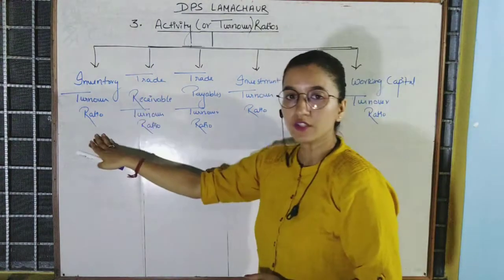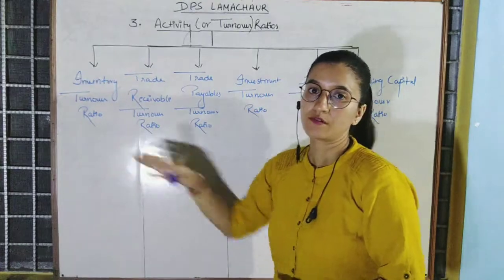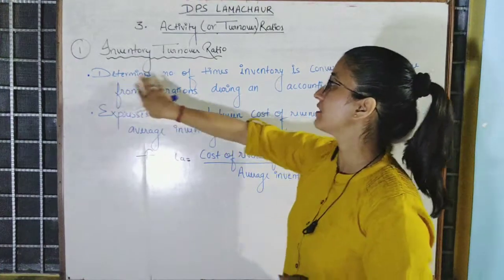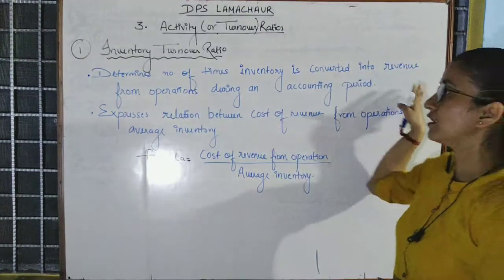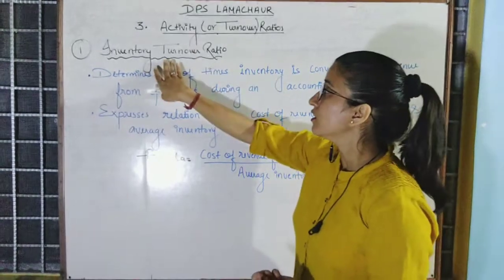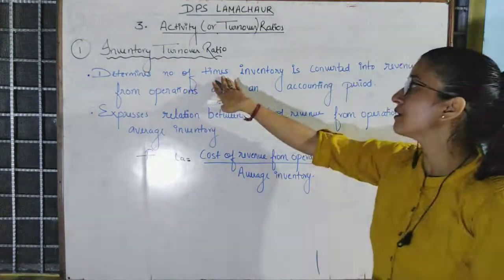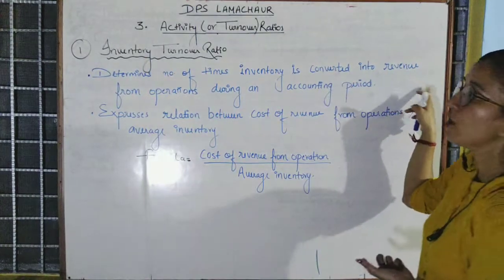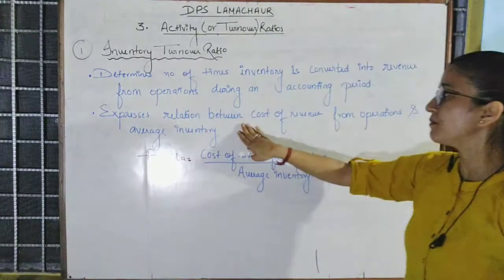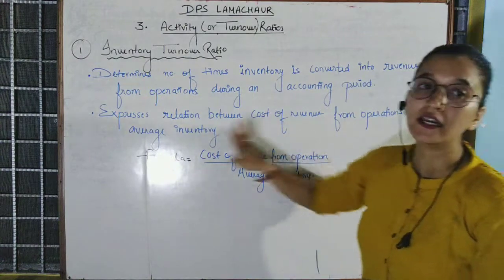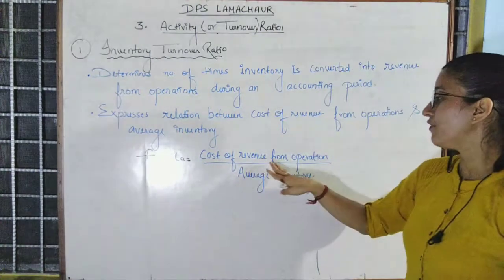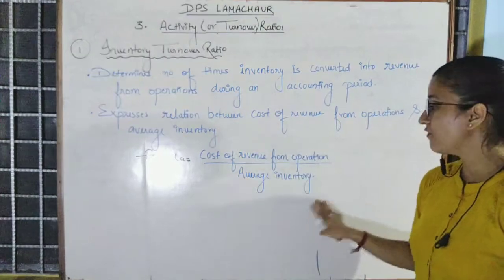We will start with the first type: inventory turnover ratio. Inventory turnover ratio determines the number of times inventory is converted into revenue from operations during an accounting period. Since inventory means stock, this ratio indicates how many times stock is converted into cash from the sale of goods and services. The formula is: cost of revenue from operations divided by average inventory.